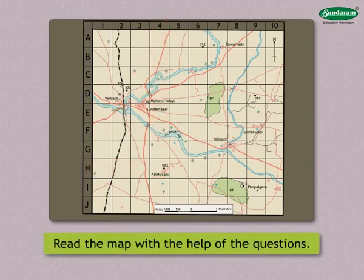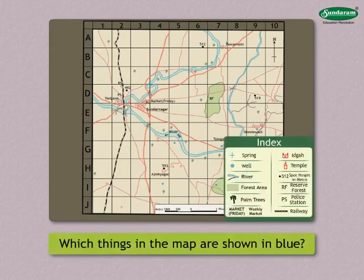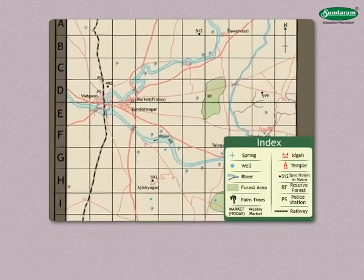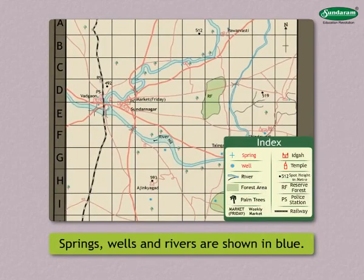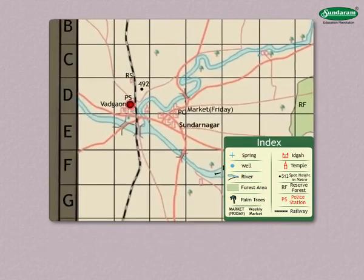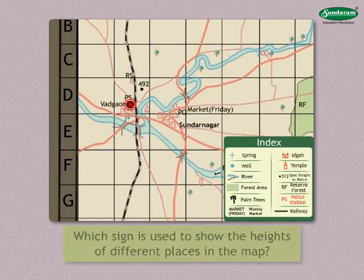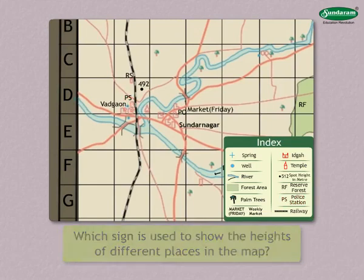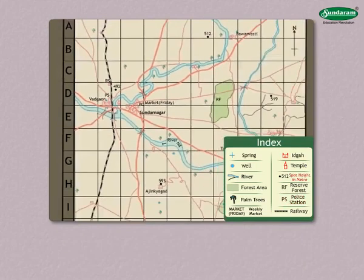Read the map with the help of the following questions. Which things in the map are shown in blue? Answer: Springs, wells, and rivers are shown in blue. Which village has a police station? Which sign is used to show it on the map? Answer: Vargaon has a police station. P.S. is the sign used to show it on the map. Which sign is used to show the heights of different places in the map? Answer: Spot height sign is used to show the heights of different places in the map.